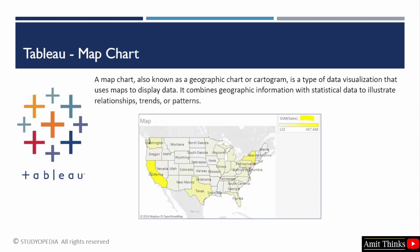A map chart is a type of chart that uses maps to display data. It will combine your geographical information with statistical data to illustrate relationship trends or patterns.